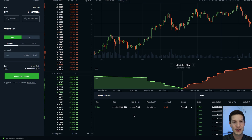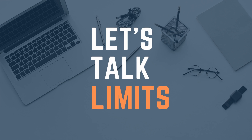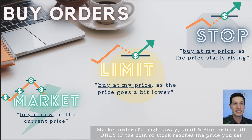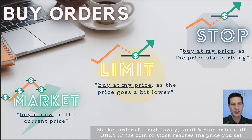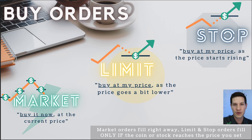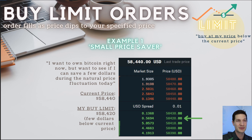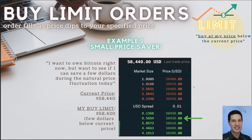Coinbase Pro gives us the opportunity to use different order types. A limit order is buying at your price as the price of the coin goes a little bit lower. You want to get a better price than the current market price. So you set an order a little bit lower than the current price and wait for the coin to pull in a little — getting the coin on sale, essentially.